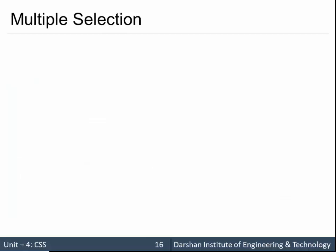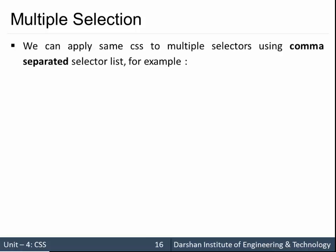Next, multiple selection. For example, I want to specify the same color property to different elements inside the HTML. What I can do is use comma separated values inside my selector.